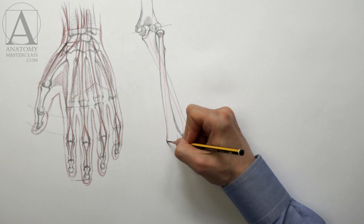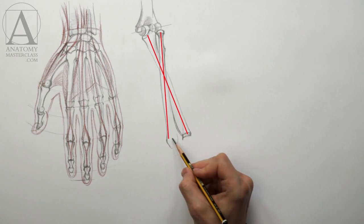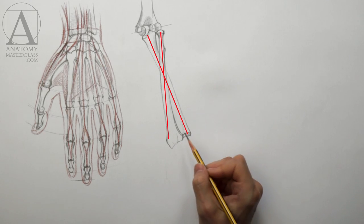In the pronation position, the radius rotates around the ulna and overlaps it from above, forming an X shape.